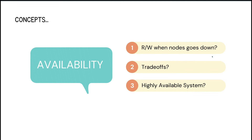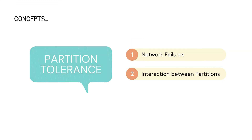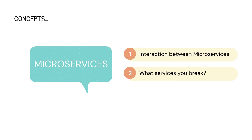You should understand what trade-offs you make when your system is not completely available — how do you handle reads and writes when a node goes down, and whether you make the system a hybrid. There is also the concept of partition tolerance — the network is divided into many partitions, and you need to understand how failures work and how interaction between partitions is handled.